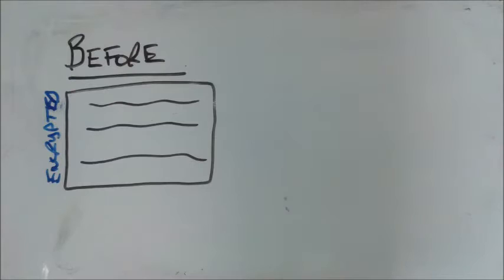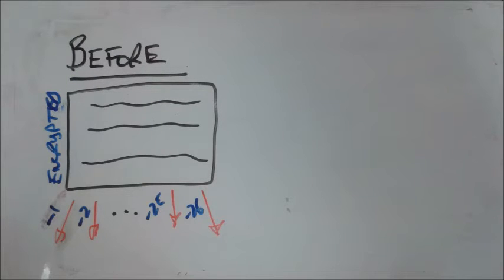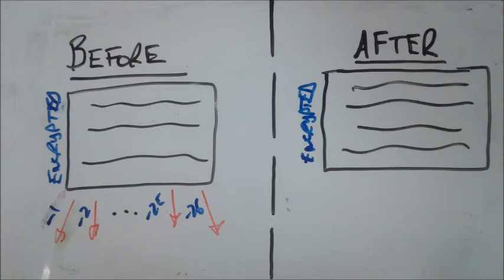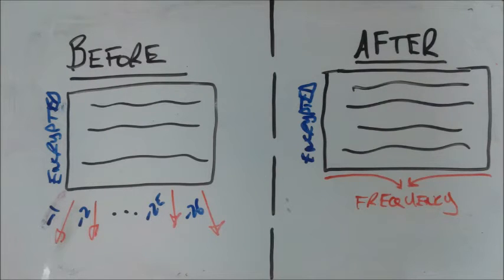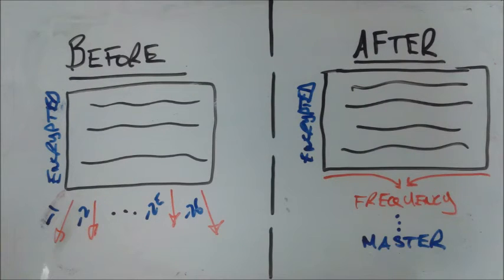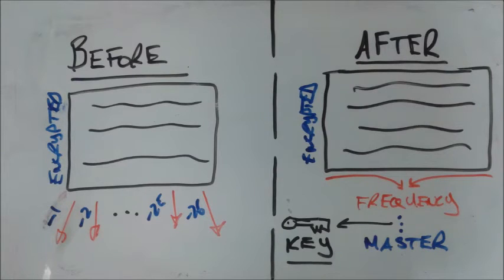Let's compare our two methods. Before we had an encrypted document, and we just tried every single shift from 1 through 26. Now we're smarter. We still have the same encrypted document, but we're going to take the frequency of letters in that document, compare with the master distribution, and generate the exact key that was used in that distribution. Let's look at this in practice.